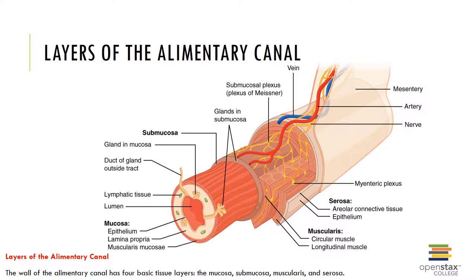The submucosa is a layer of dense, irregular connective tissue surrounding the mucosa and contains large blood vessels, lymphatic vessels, nerves, and in some regions, exocrine glands that secrete enzymes and buffers into the lumen of the GI tract. The muscularis externa is dominated by smooth muscle oriented in two layers — an inner circular layer and an outer longitudinal layer. These layers are essential in the mechanical processing and propulsion of food through the GI tract.